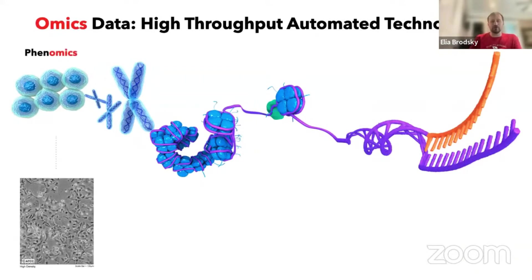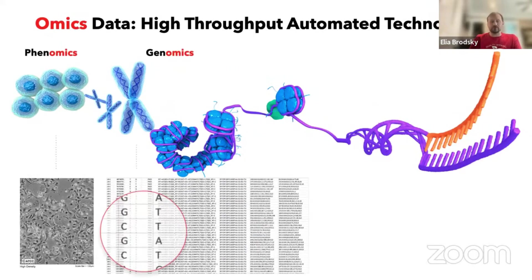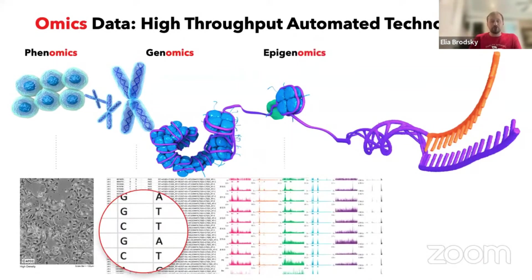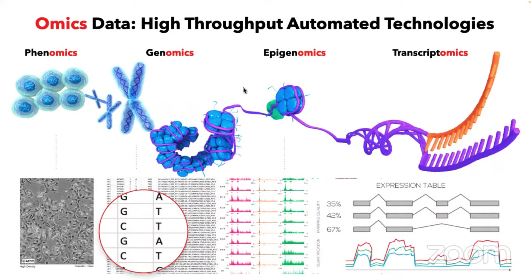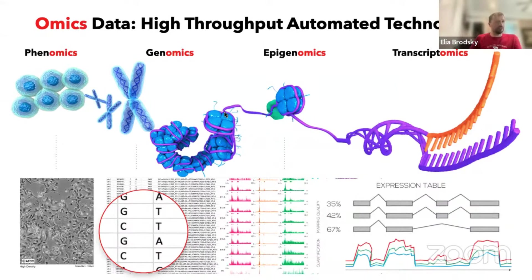Or I can analyze gene expression tables. All of these different types of data come in an unstructured format. The first goal that I have is to actually organize them into a table, into a matrix, because a matrix is something I can now apply different types of data analysis methods to.